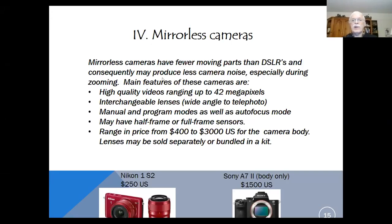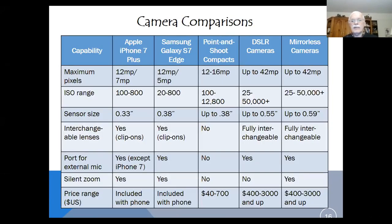Finally, mirrorless cameras have fewer moving parts than DSLRs, resulting in less camera noise when zooming or clicking. Main features are similar to DSLRs: high-quality video up to 42 megapixels, a wide variety of interchangeable lenses, manual and program modes, and half-frame or full-frame sensor options. Prices range from $250 for the Nikon 1S II — which includes two lenses — to over $3,000 for a camera body. Lloyd's preferred camera is the Sony A7 II at about $1,500, which with a lens or two brings the total to just over $2,000.